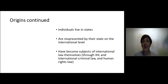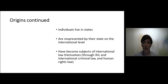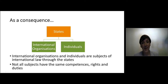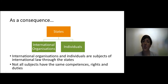As for individuals — they live in states, and for a long time they were represented on the international sphere by their governments. But they have obtained a level of subject of international law through certain developments, for example international humanitarian law, international criminal law, and international human rights law. International criminal law now shows that through the International Criminal Court, individuals can be tried for international crimes. As a consequence, states are the primary subjects of international law, while international organizations and individuals are subjects only by virtue of states and through states. Not all subjects have the same capacities, obligations, or rights — only states have the full capacity in international law.